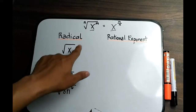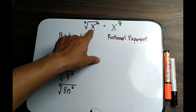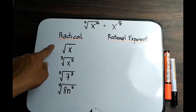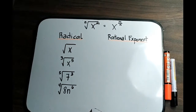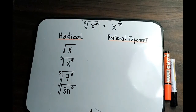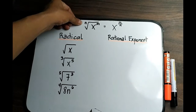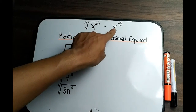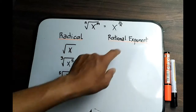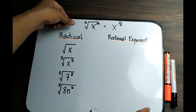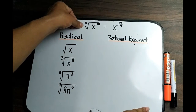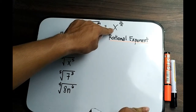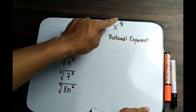Hi guys. In this video I will teach you how to convert radical expressions to rational exponents. We have the general form: the nth root of x raised to m is equal to x raised to m all over n. This is the general form for radical expressions, and this is the expression with rational exponents.